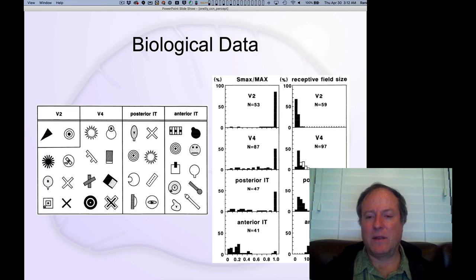That's really what we're seeing here: by the time you get up into your infratemporal cortex, you have neurons that are responding up to about 20 degrees of visual angle. That's about the size of your laptop screen at a normal viewing distance.